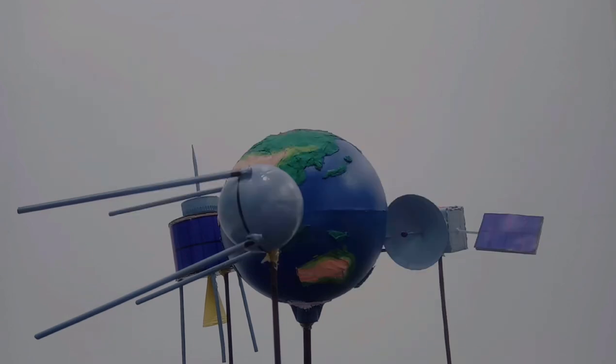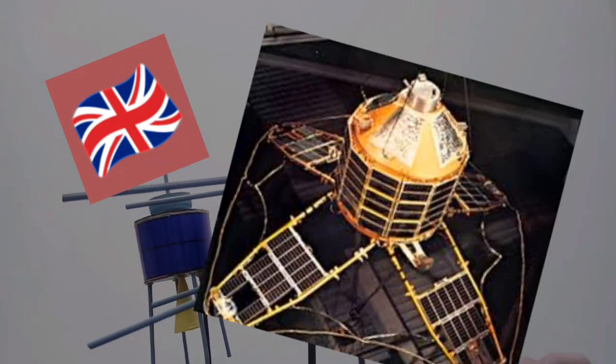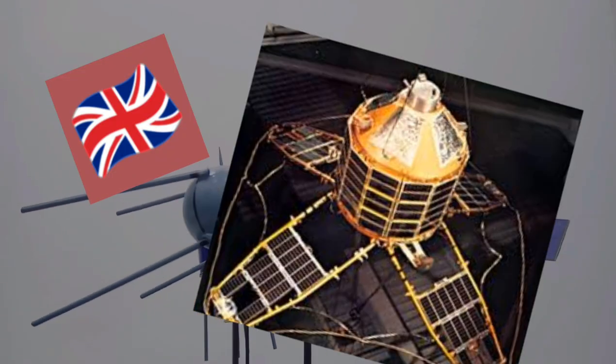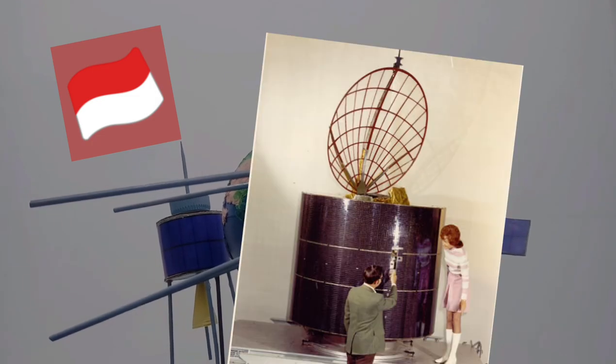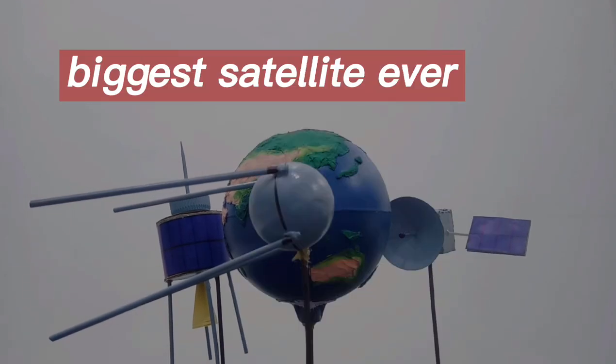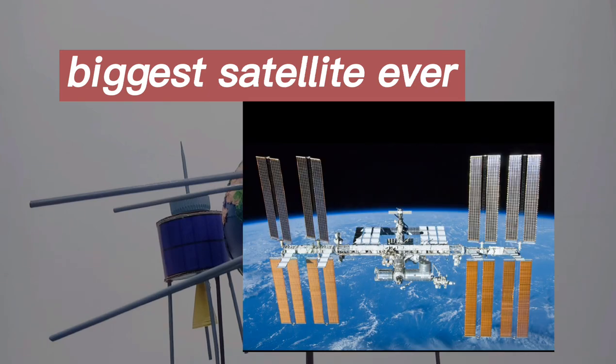Then, various countries were not far behind the movement, such as British, who launched an ionospheric research satellite, Ariel 1, and Indonesia, who launched their first satellite, Palapa A1. The biggest satellite humans have ever built today is the International Space Station ISS.